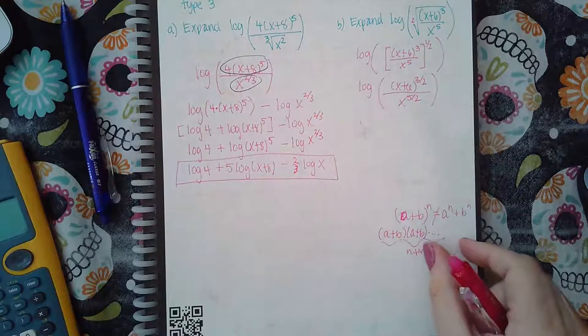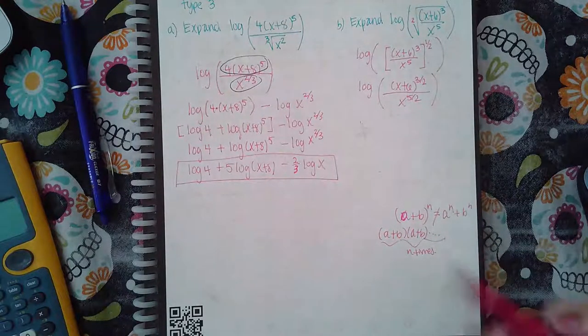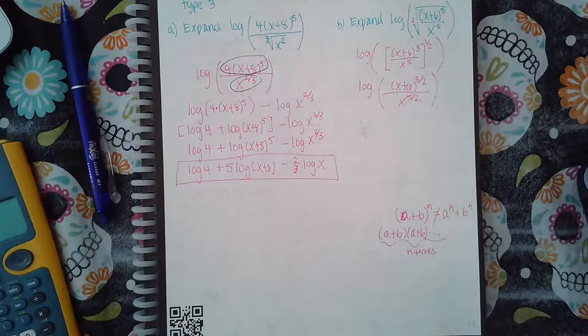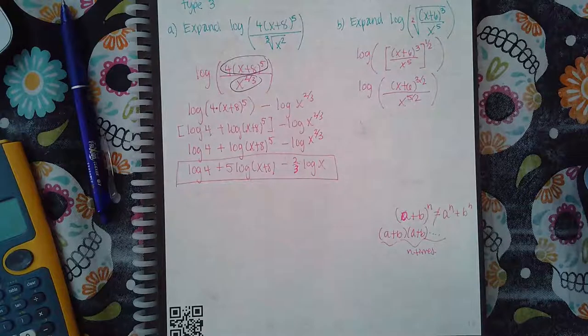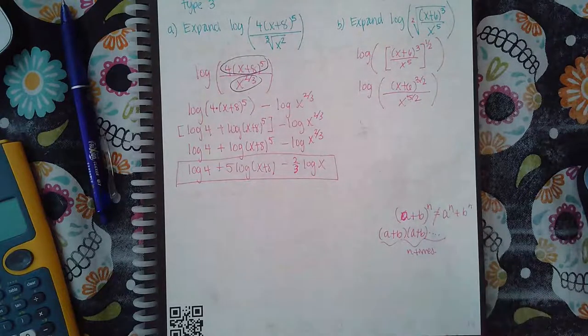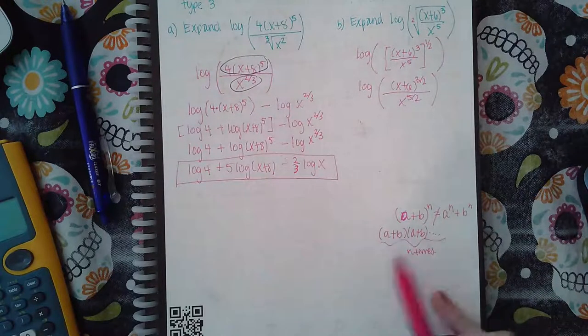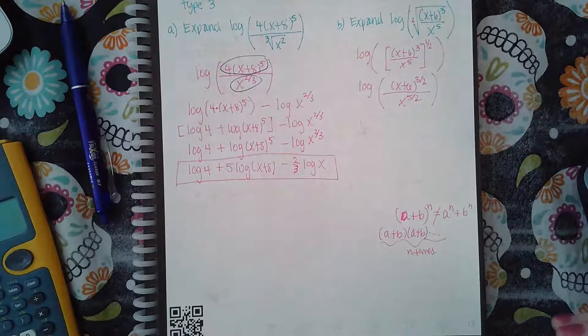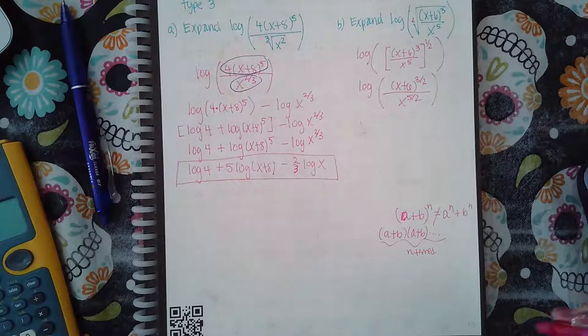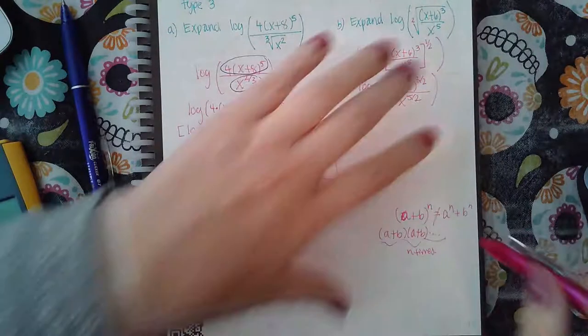You cannot just square the numbers individually. There's no rule that says you can do that. No rule that says that this is equivalent to that. So when you do that on your paper you're breaking the laws of mathematics and it will be counted wrong.